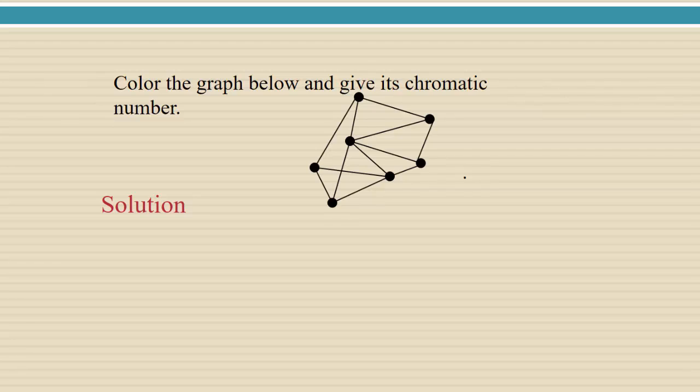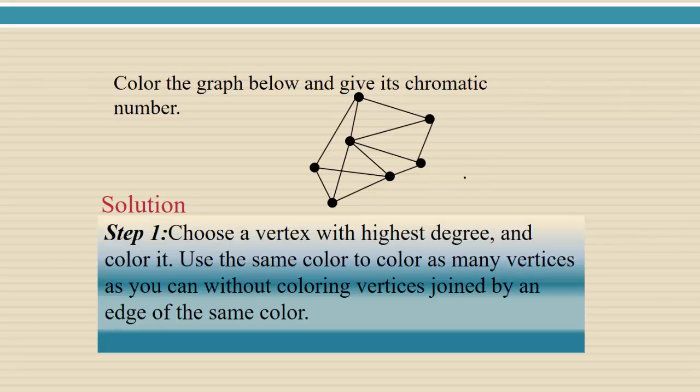For example, if you're asked to color the graph below and give its chromatic number, you're going to start by choosing a vertex with highest degree. Here are the degrees. The degrees are just the number of edges that touch each vertex. The vertex of highest degree is degree five, so we'll start by coloring that one.